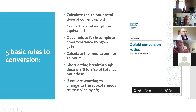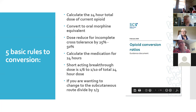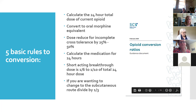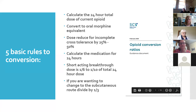If someone is on oxycodone, fentanyl, or another medication, we always convert it to the oral morphine equivalent using the opioid conversion ratio guidance document put out by Safer Care Victoria. That's a document from February of this year, and everyone in palliative care is being encouraged to use the same document to ensure consistent calculations. Because of first pass metabolism through the liver for orals, we dose reduce for incomplete cross tolerance by 25 to 50% — generally in palliative care we reduce by 30%, dividing by a third. For elderly and frail patients, you might dose reduce by 50%.